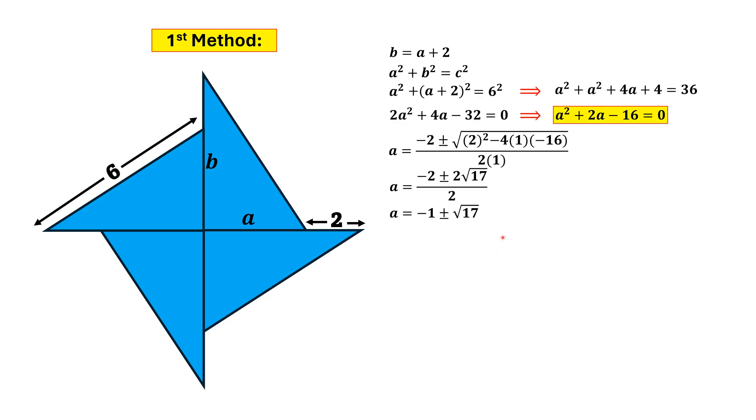These two roots can be written separately as -1 + √17 and -1 - √17.